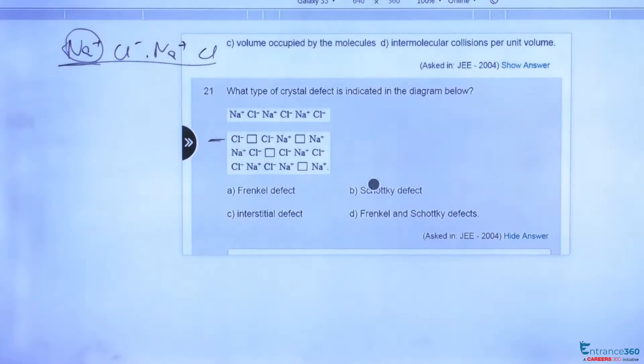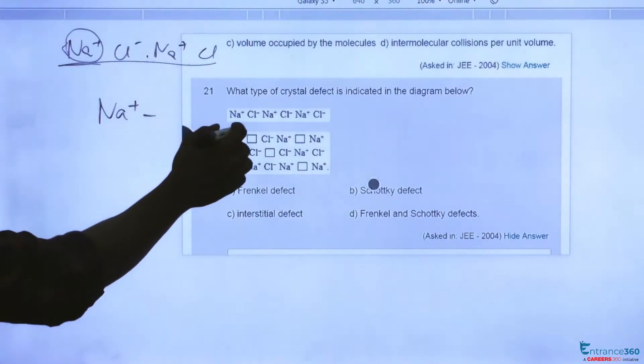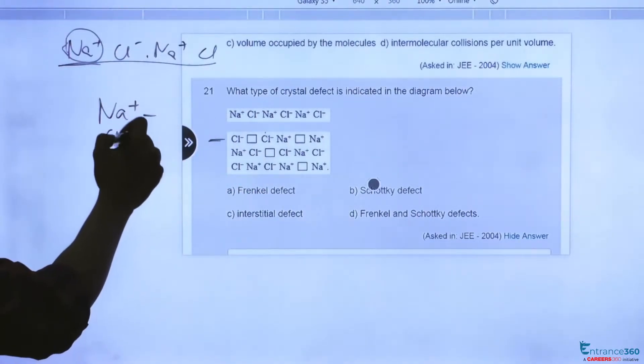In this diagram we can see that there are four total atoms that are missing. Here there should be Na positive ion which is missing. Again here one Cl minus atom is missing.